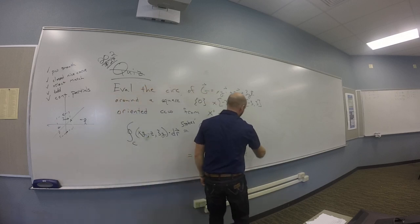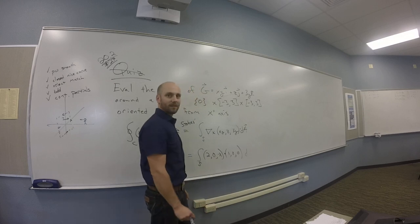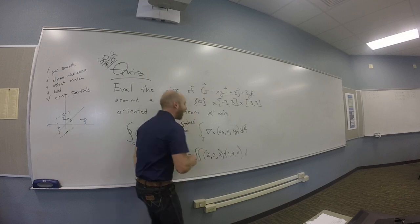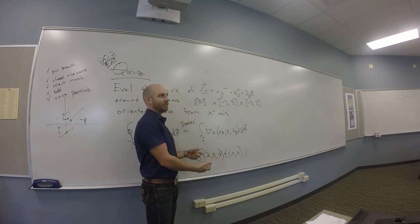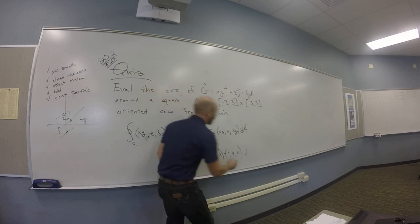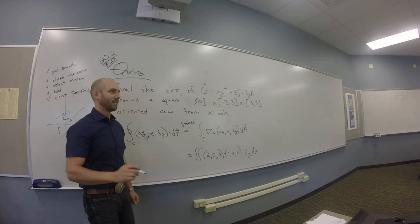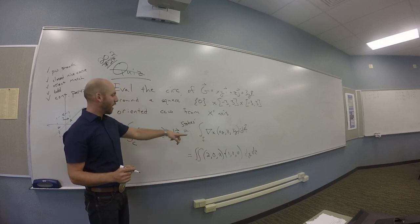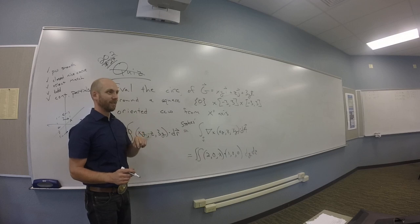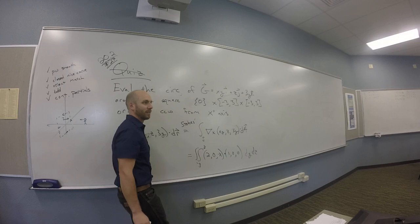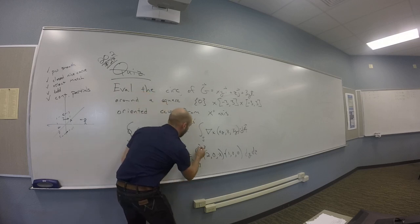And now here I should be integrating d what? dy, dz. dy, dz, yeah. dy, dz. So I need some parameterization, right? So that's going to be in y's and z's, right, for a square in the yz plane. And it's going to go in the y's. Where's your square list? Negative 3 to 3. Negative 3 to 3. And here is z. Negative 3 to 3. Negative 3 to 3.